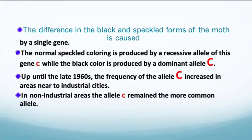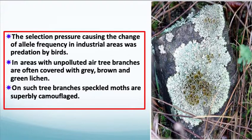The difference in the black and speckled forms of the moth is caused by a single gene. The normal speckled coloring is produced by a recessive allele, while the black color is produced by the dominant allele. Up until the late 1960s, the frequency of the dominant allele C increased in areas near industrial cities, while in non-industrial areas the recessive allele c remained the most common. In areas with unpolluted air, tree branches were often covered with gray, brown, and green lichen, on which speckled moths are superbly camouflaged.